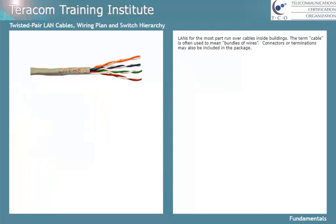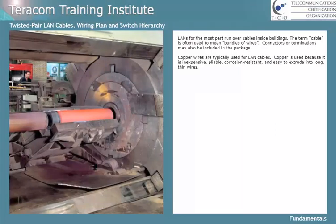LANs for the most part run over cables inside buildings. The term cable is often used to mean a bundle of wires. Connectors or terminations may also be included. Copper wires are typically used for LAN cables. Copper is used because it's cheap, pliable, corrosion resistant, and it's easy to extrude like toothpaste out of a tube into long thin wires.